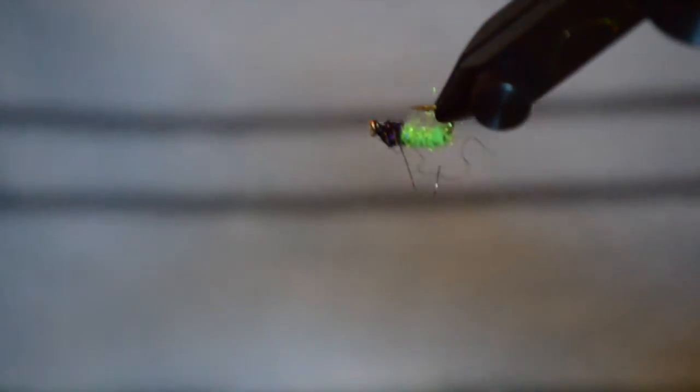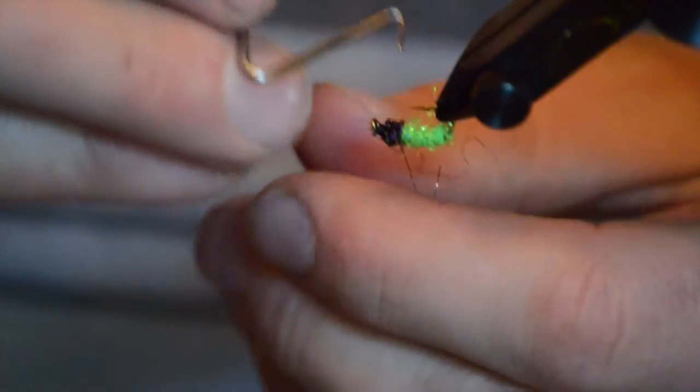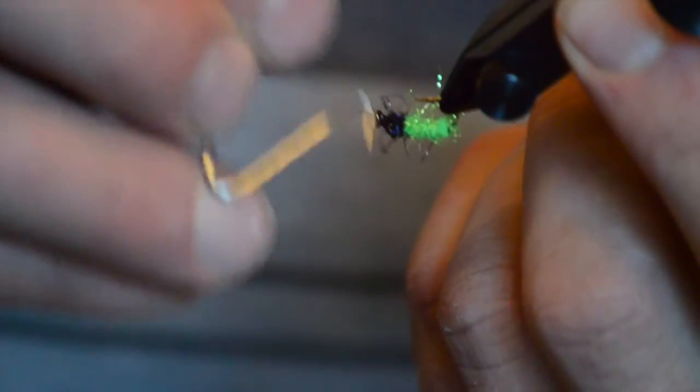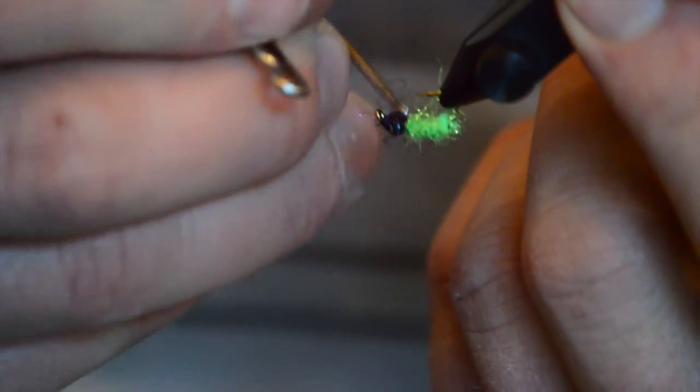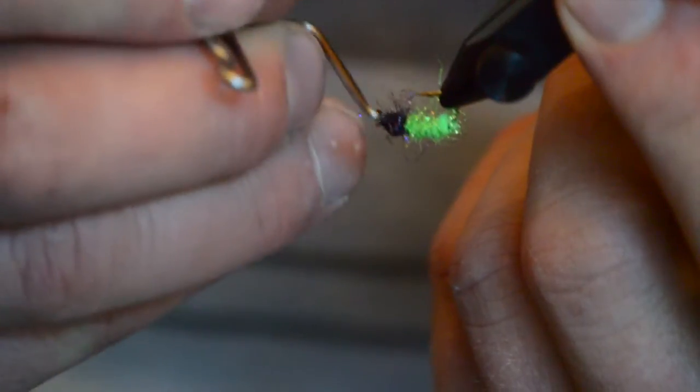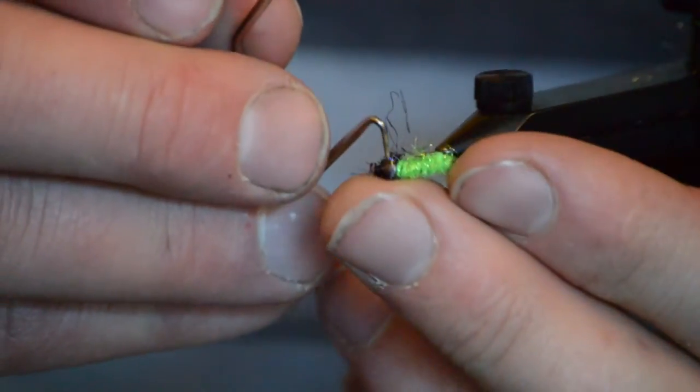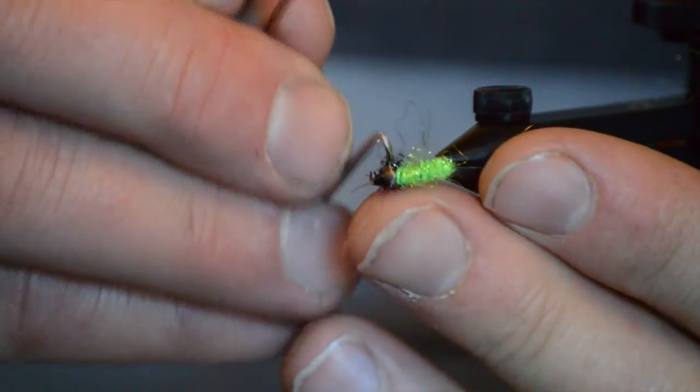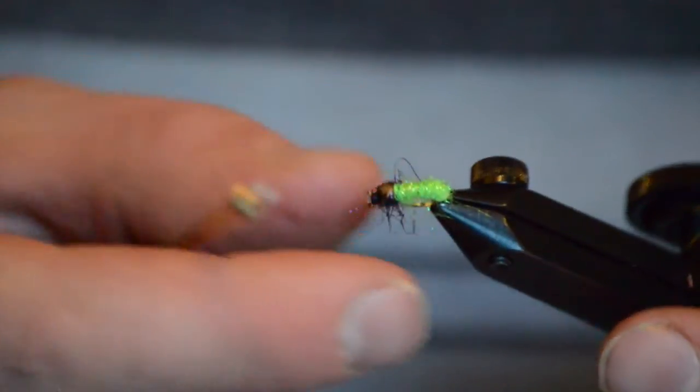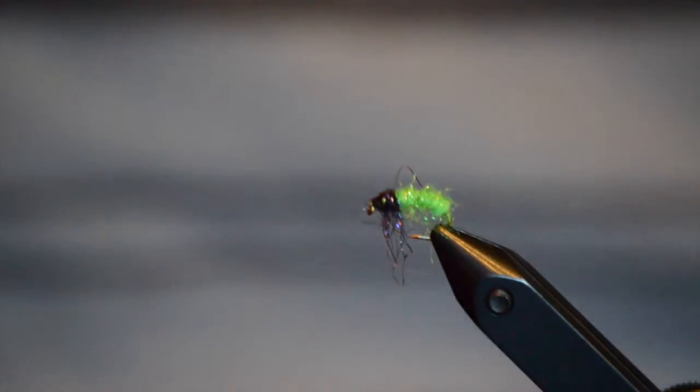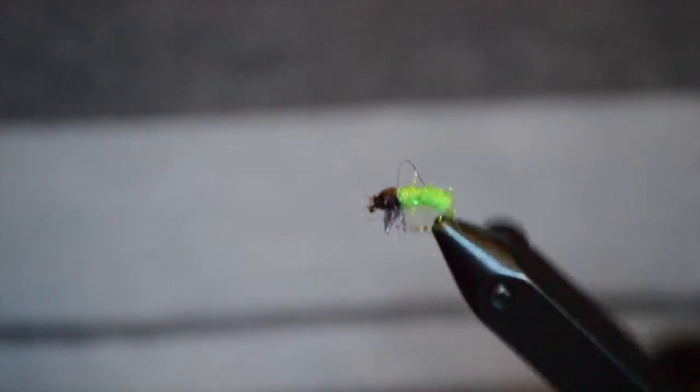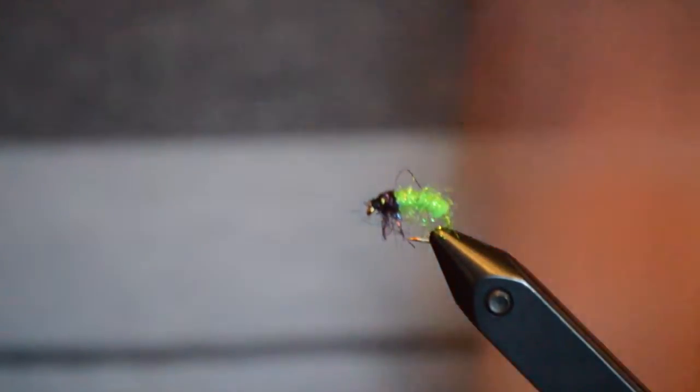The last part of this pattern is creating the legs on this. So either you take a bodkin or the end of your whip finish tool and just pick out those fibers on the bottom to simulate the legs coming out the bottom side of our caddis. Often these are free living caddis that have lost their case. And so we'll try and imitate something with some legs coming out the bottom as you would in real life. We'll trim those fibers to about the length of the hook shank. And then if there's any green fibers that are kind of long from our abdomen we'll also clip those too.